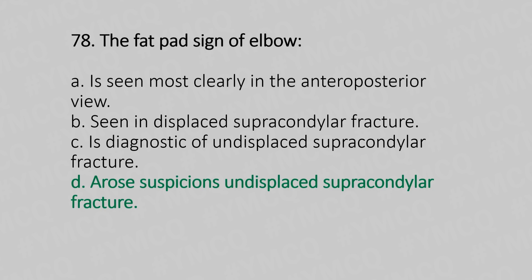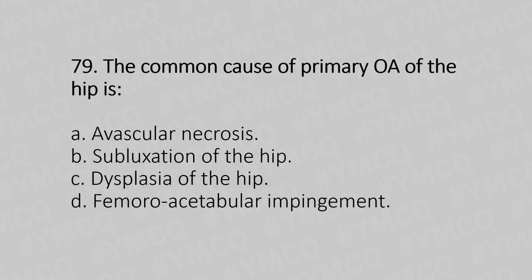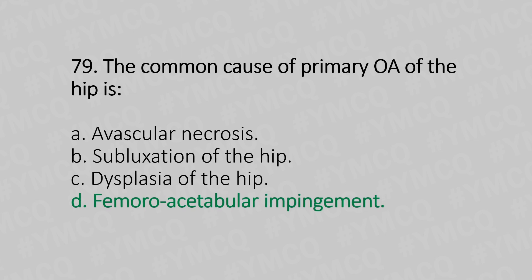Now let's move to question number 79. The common cause of primary OA in hip is: Option A, Avascular necrosis; Option B, Subluxation of the hip; Option C, Dysplasia of the hip; Option D, Femoroacetabular impingement. And the answer is Option D, Femoroacetabular impingement.